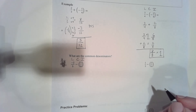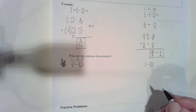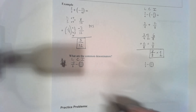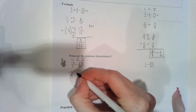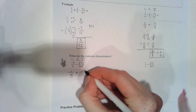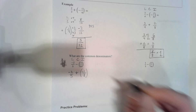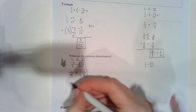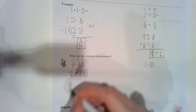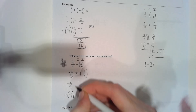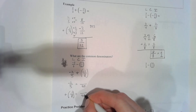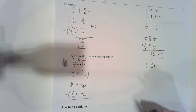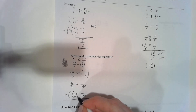One denominator that works is forty — that's the least common denominator, though higher numbers could also work. Hopefully you got forty. Now copy with me: leave-change-inverse. This becomes addition, and we use that denominator of forty.